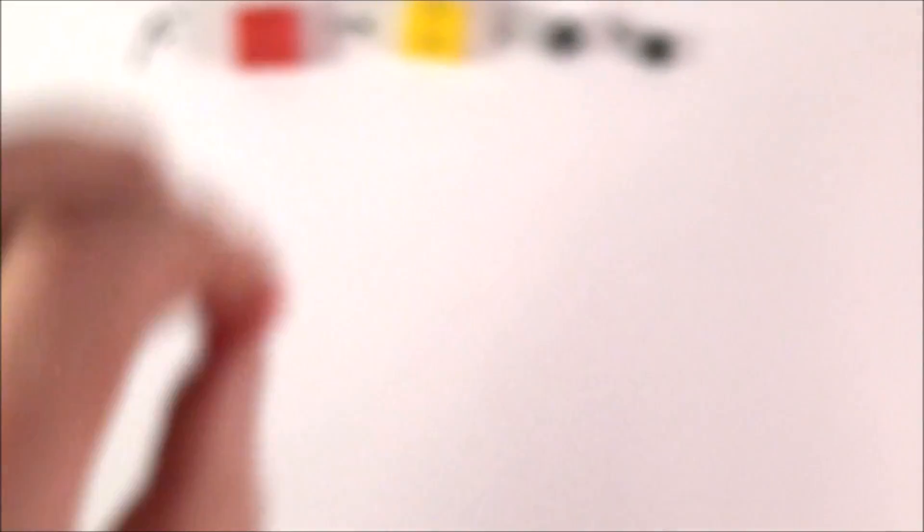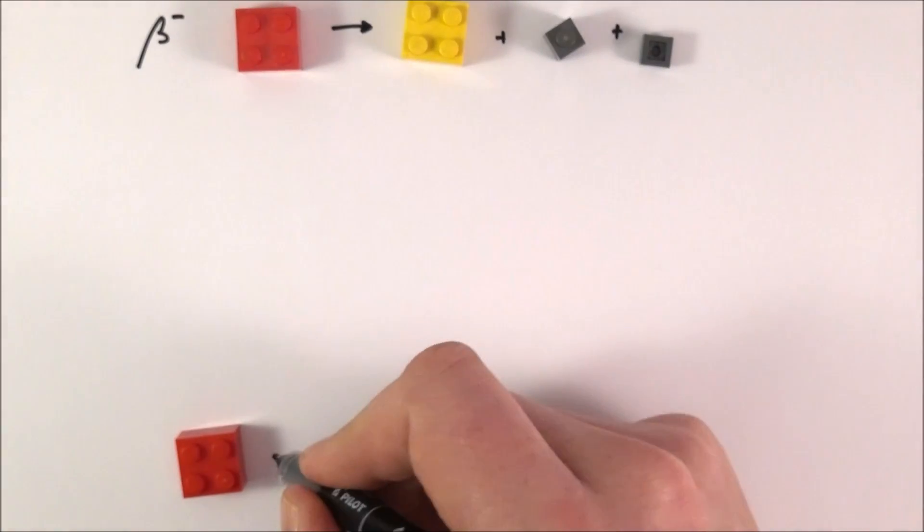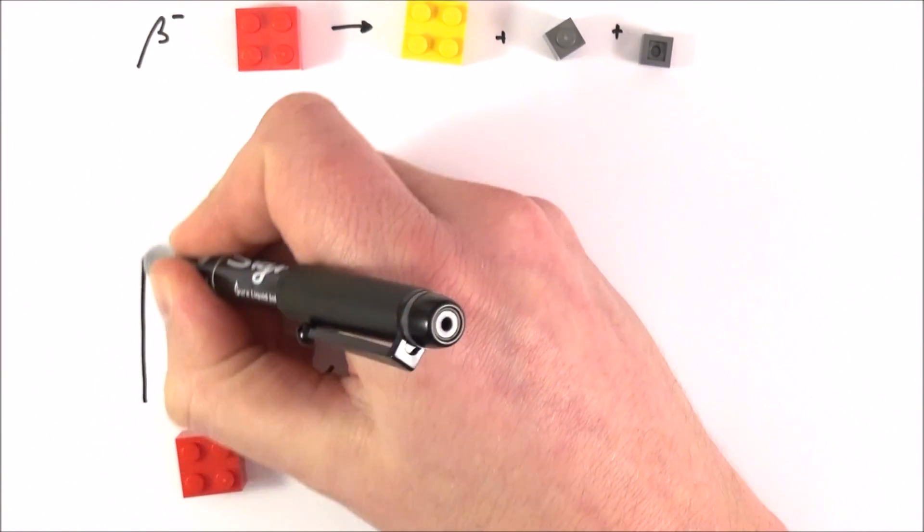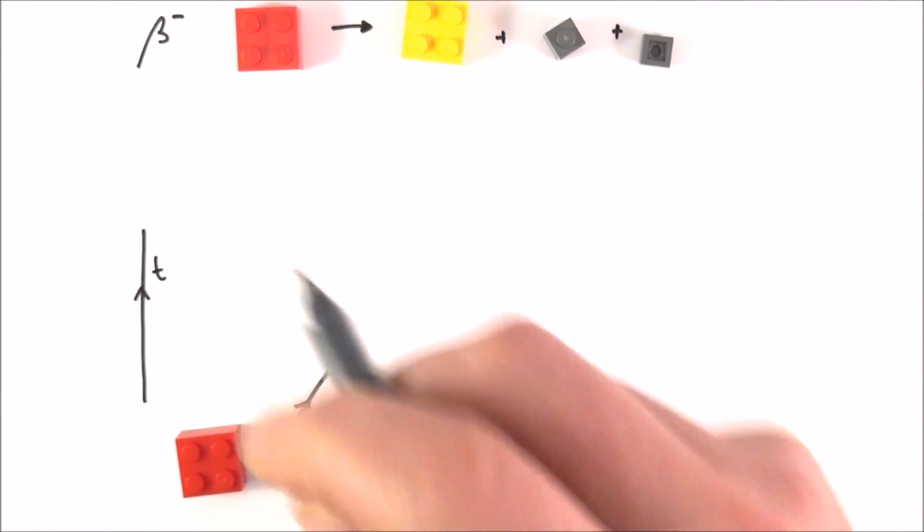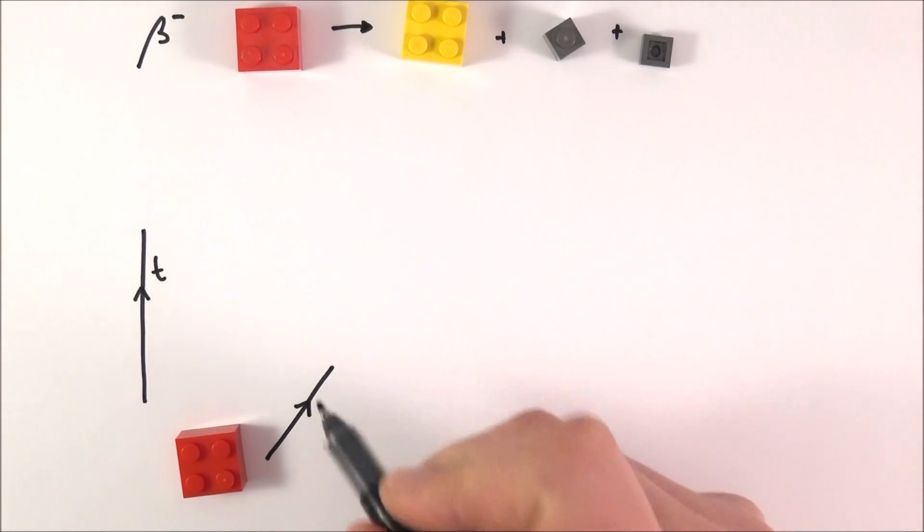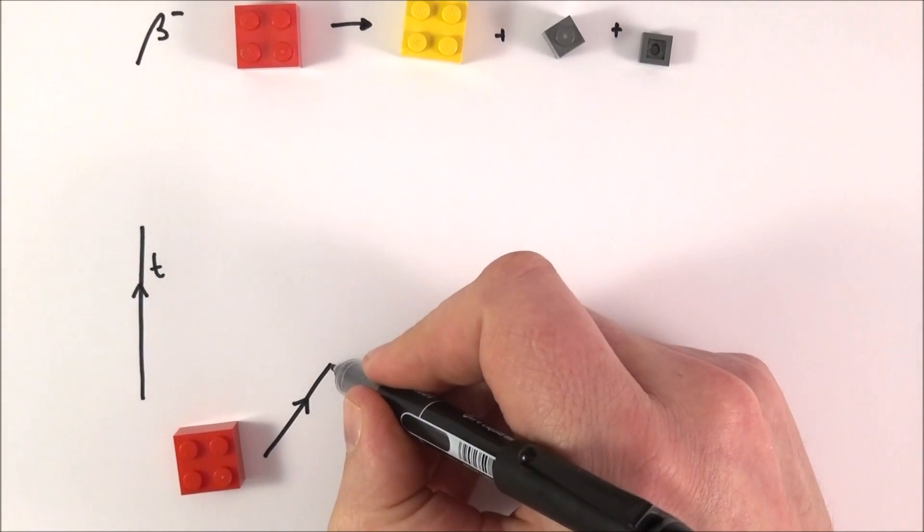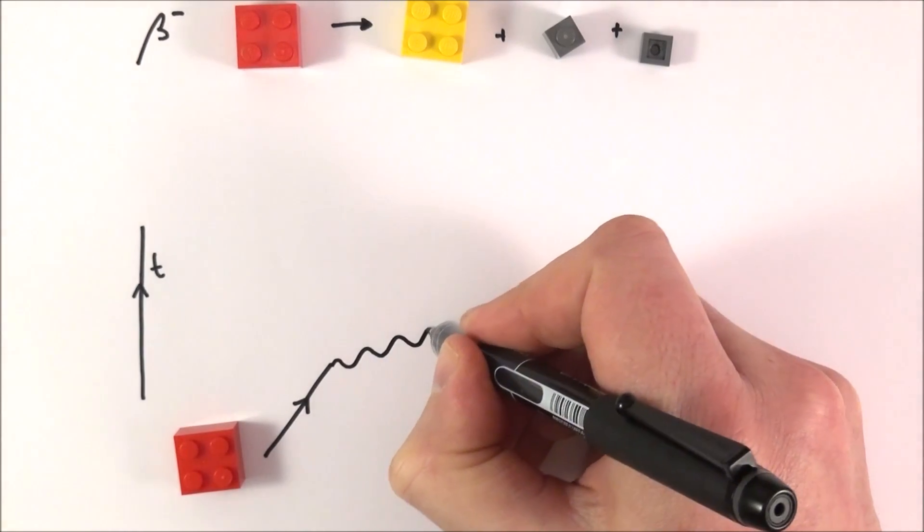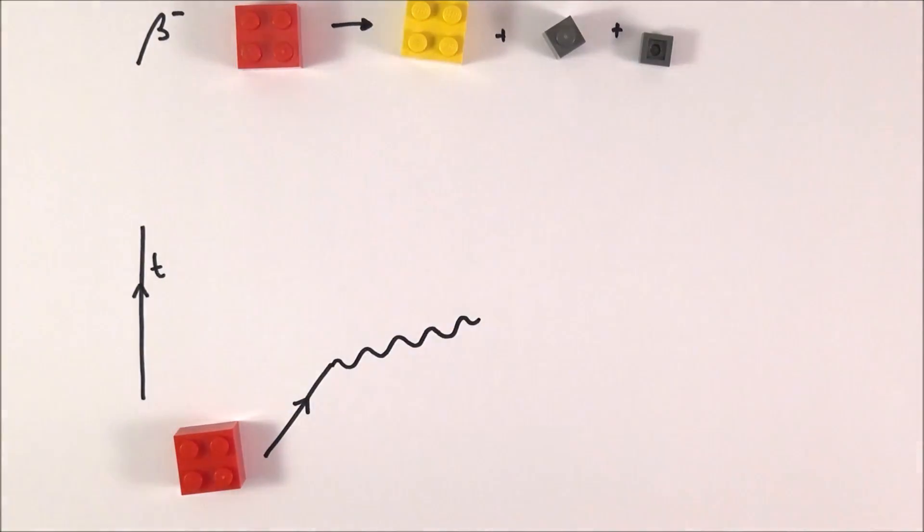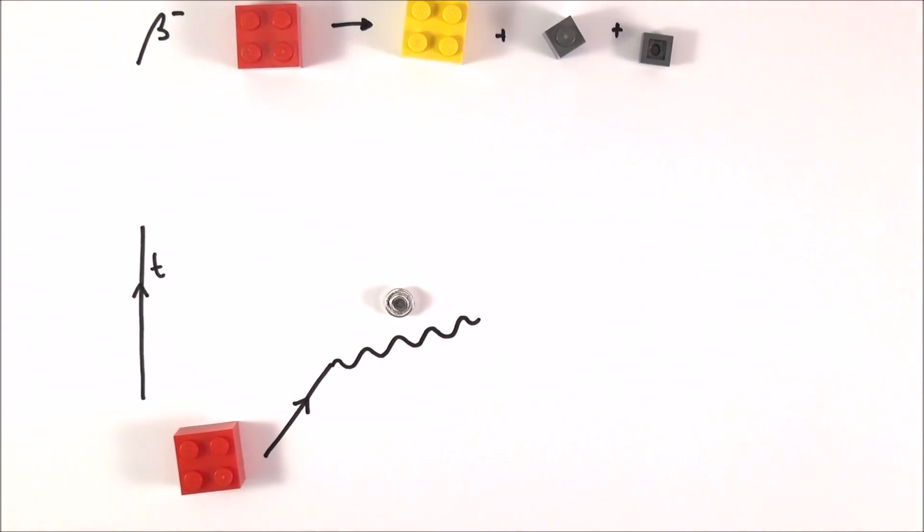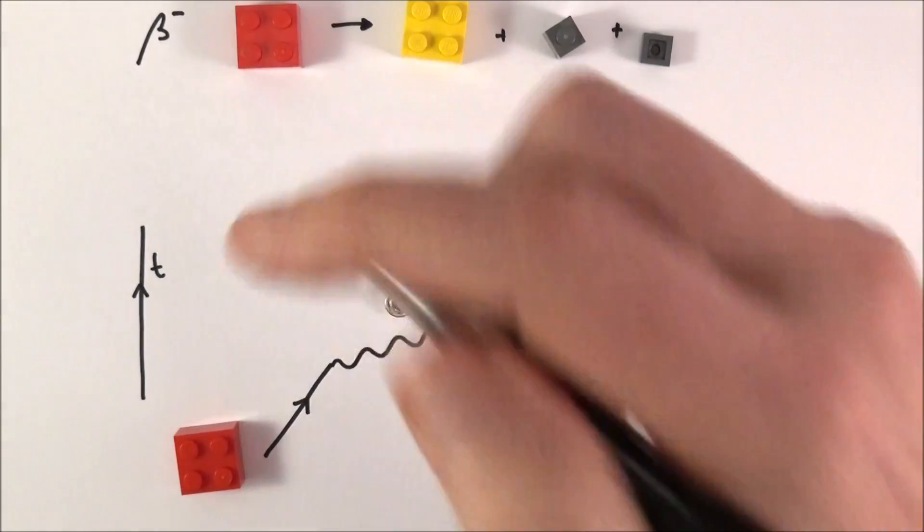So first of all, what we're going to do is we're going to start with the neutron down here. We're going to think about what happens as time progresses. This neutron here is going to decay by the weak force. I'm going to show this weak force here, again with this squiggly line, and I'm just going to have this bit of Lego here to be my W boson.